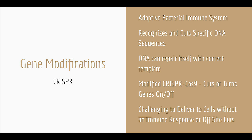So kind of in conclusion: this is an adaptive bacterial immune system. Bacteria are exposed to viruses, they clip out little pieces of DNA, and then they create a protein-RNA system that can recognize and cut DNA. We know that DNA can repair itself if there's a template, so cutting it gives a chance to fix little mutations. A lot of interesting research around binding without cutting is really important because we can up-regulate and down-regulate genes. But right now the biggest issue is delivering this to cells.